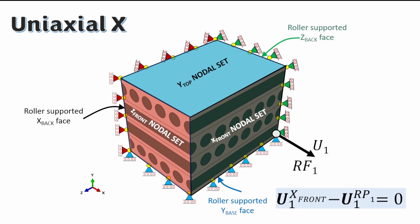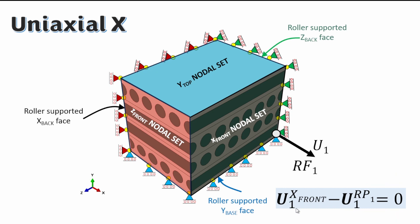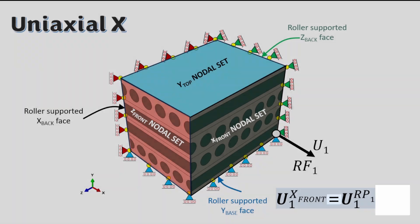To constrain the deformation applied at reference point 1 to the X front face, we need a constraint equation. Basically, the equation states that the deformation of the X front face minus the deformation of reference point 1 equals zero — in other words, the deformation of the X front face will equal the deformation of the reference point. We implement this using a constraint equation with the star equation feature.